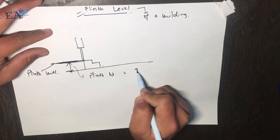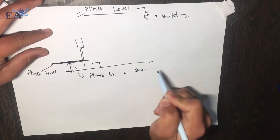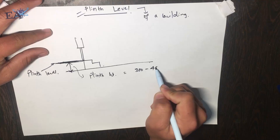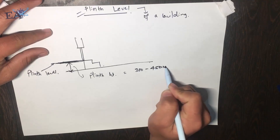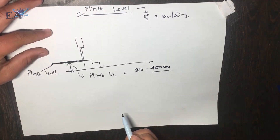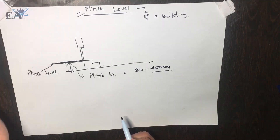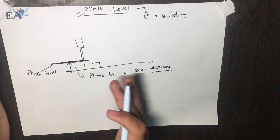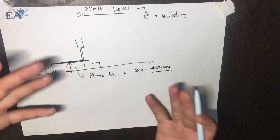The height of this plinth level from the ground is called the plinth height, and it varies from 300 to 450 mm.